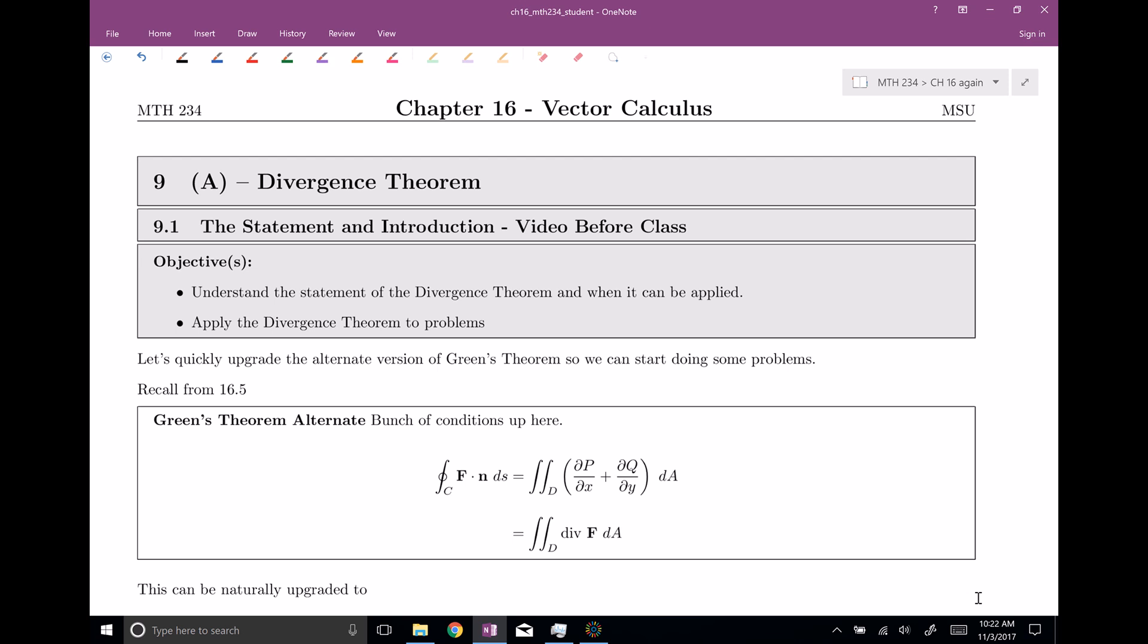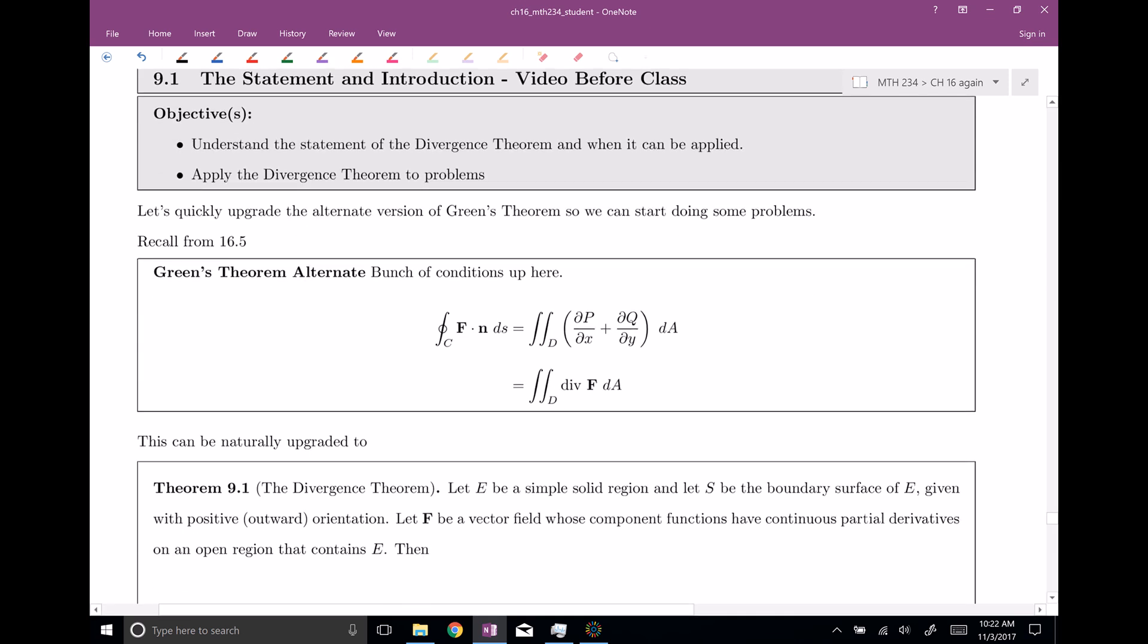I want to recall from 16.5 that there was this alternate form of Green's theorem. The alternate form went like this: if you do a line integral of f dot n, so this is now not the unit tangent vector, but the unit normal vector, we can actually simplify this line integral into a double integral over a region or a surface in the x, y plane. And so again, this is all done in just two dimensions. We only had x's and y's. Our vector fields only had p's and q's.